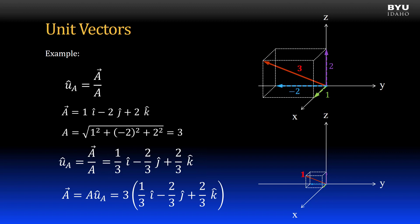The original vector can be represented as its magnitude times the unit vector, as shown.